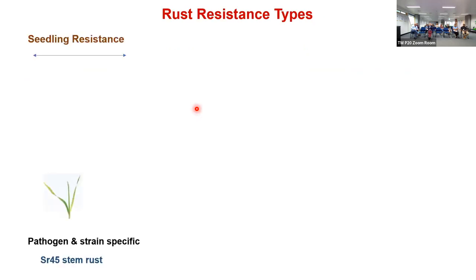In wheat there are two types of rust resistance. The first is seedling resistance — as the name indicates, the resistance is expressed right from the seedling stage and lasts throughout plant growth. These are more pathogen- and strain-specific. For example, SR45 stem rust resistance can only resist certain groups of stem rust races.